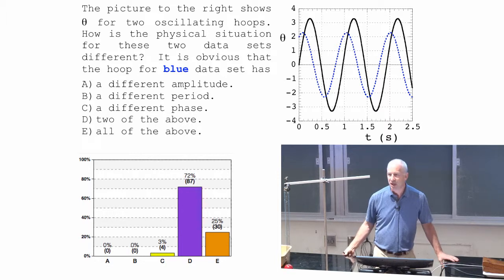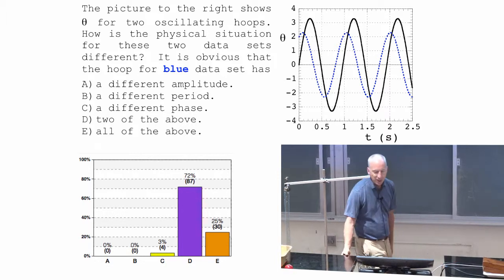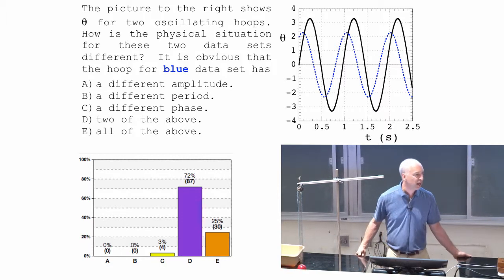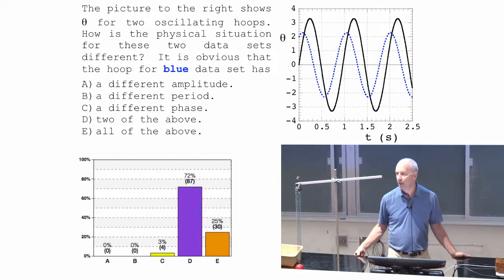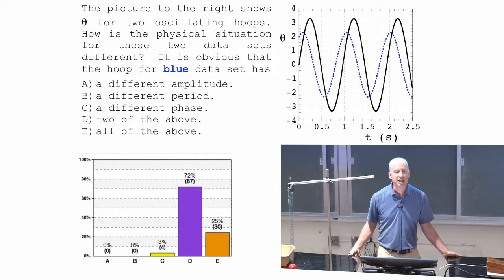Zero is a good phase for that because it looks just like a sine function. The other one is shifted, is a sine function shifted to the left a little bit.